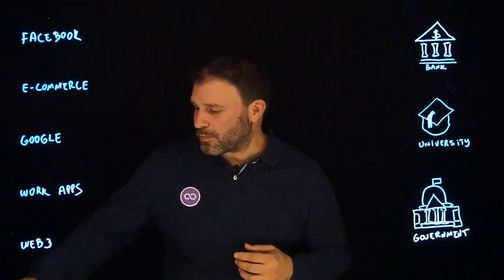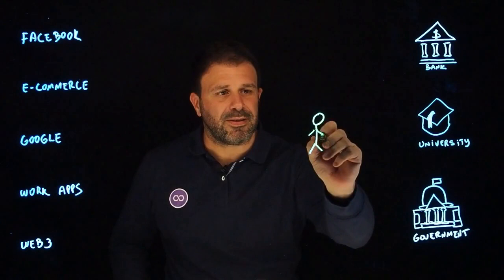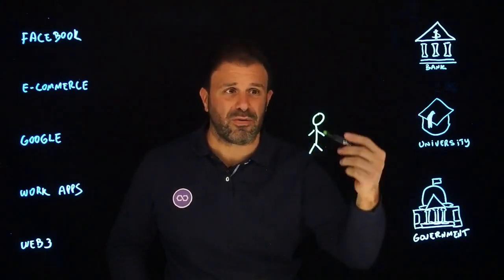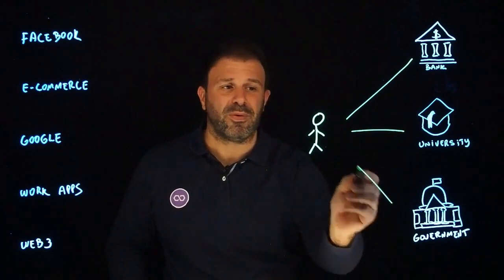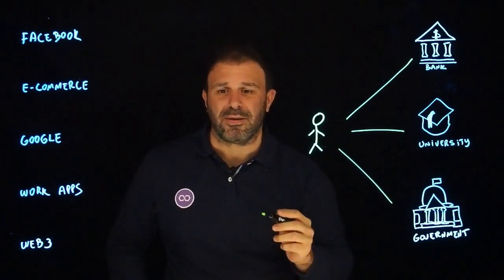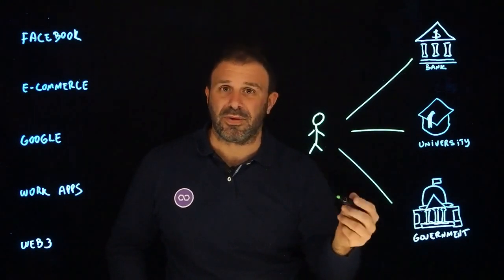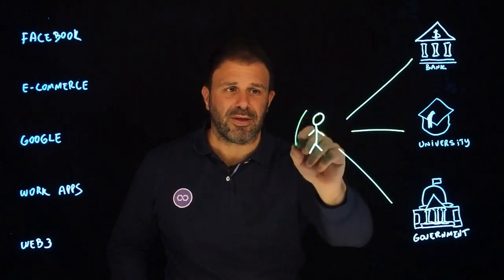Let's think about what our digital identities are. So in the real world, we have one single identity, and that identity is what others say about us — some sources of trust. It could be your family, your friends, your bank, your university, your government. Through your life, you get different attestations and credentials, things that others say about you that create your identity.